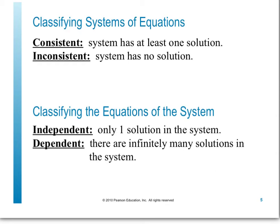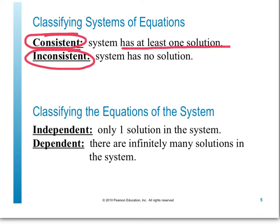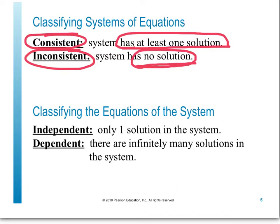Once we start looking at systems of equations, there are different terms we use to classify them. We classify systems using the words consistent and inconsistent. Consistent means the system has at least one solution. Inconsistent means the system has no solution — there is no ordered pair that works for an inconsistent system.